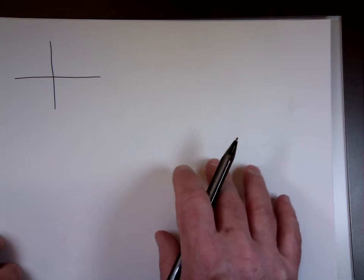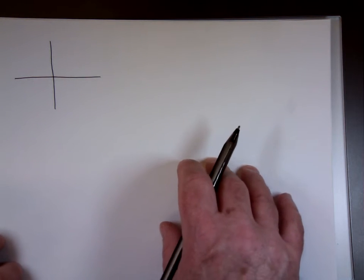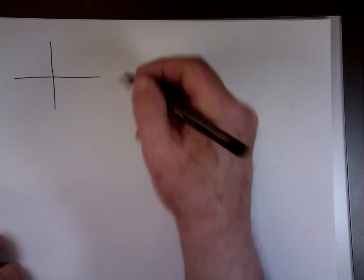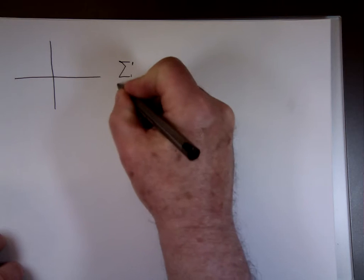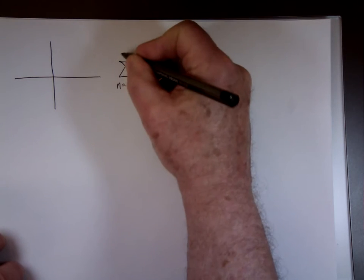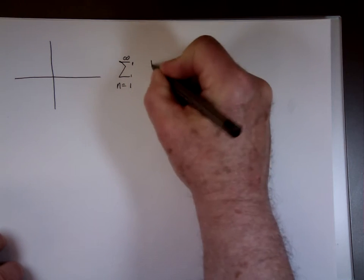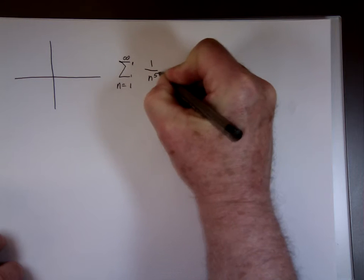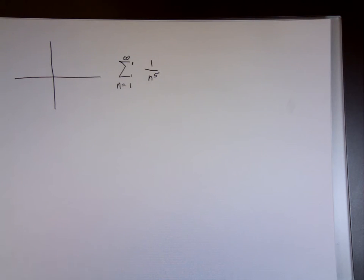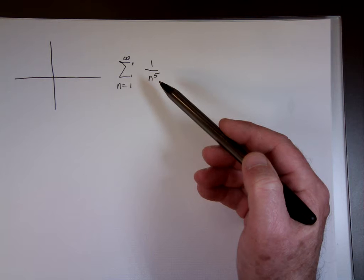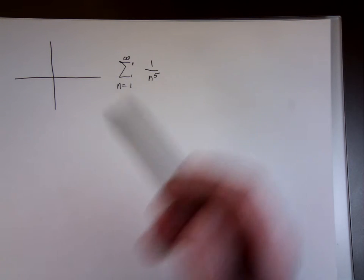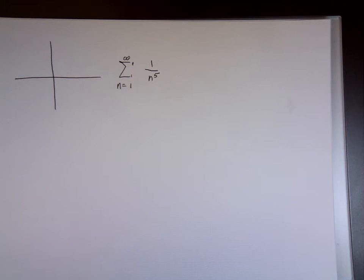Alright, it says use the integral test to determine the convergence or divergence of the P series, and then it has a P series here. So from N equals 1 to infinity, 1 over N to the fifth. Well, what you should realize right off the bat, P series where P is greater than 1 converges. So this one definitely converges without doing a heck of a lot.